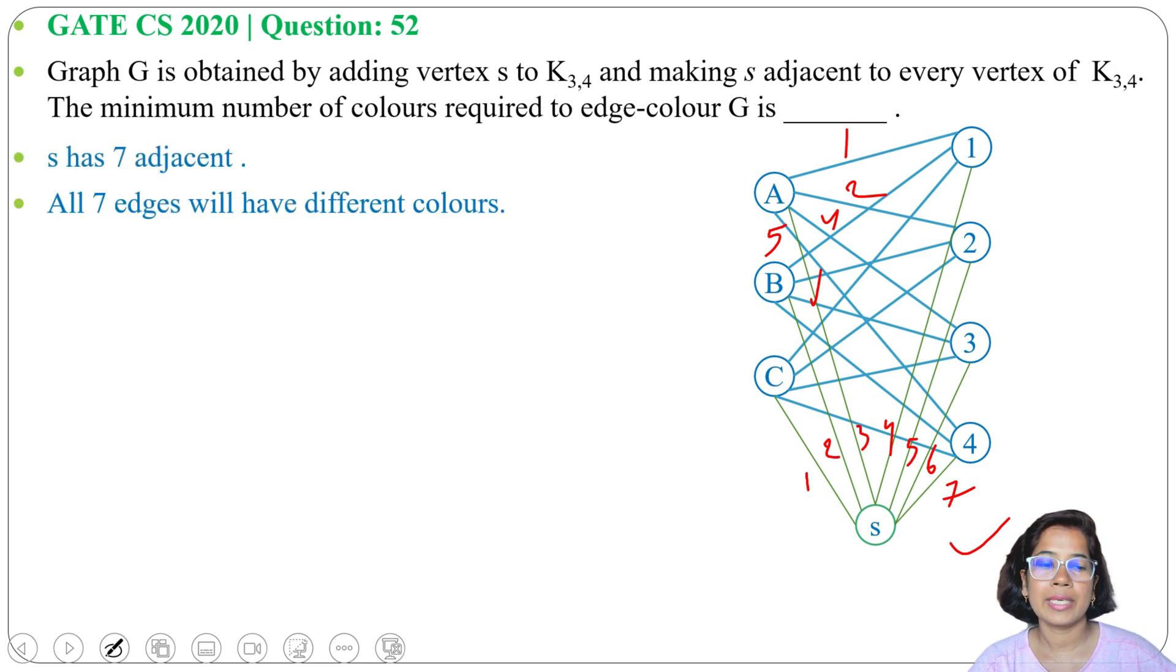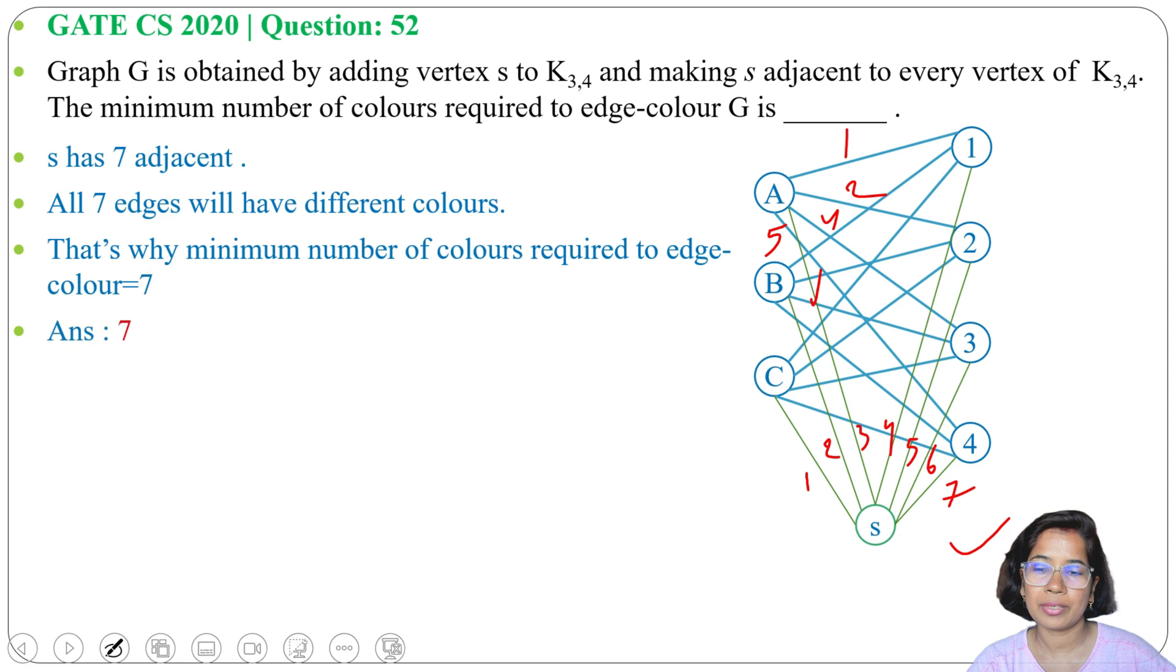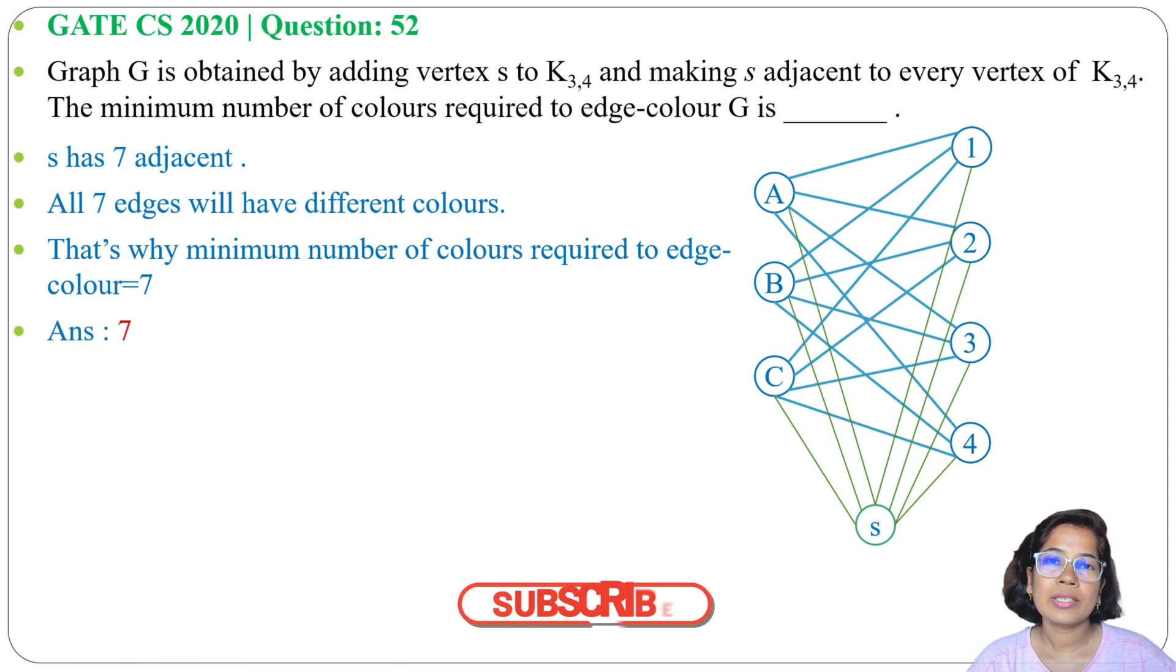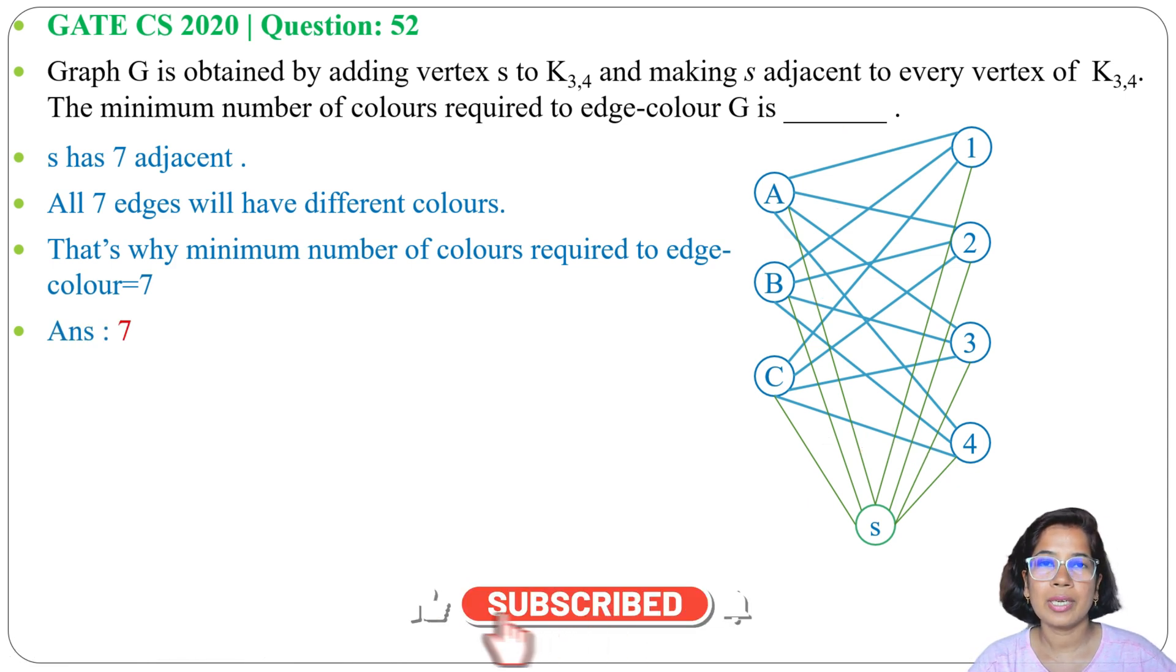The minimum number of colors required is 7, as S has 7 adjacent edges. The answer is 7. I already discussed graph coloring in another lecture, so please go through that. If this lecture is helpful, please like, share, and subscribe. Thank you.